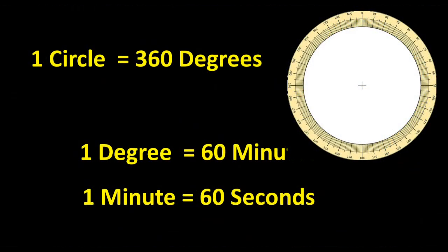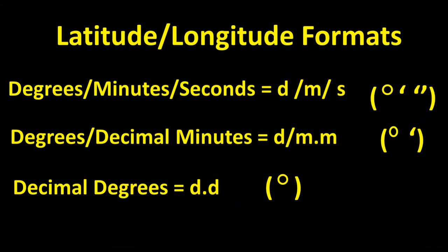First, let's review. Lines of latitude are divided into degrees, as with a standard circle. Each degree is subdivided into 60 minutes, and each minute is subdivided into 60 seconds. There are three formats in which longitude and latitude are given: degrees-minutes-seconds, degrees-decimal minutes, and decimal degrees. We previously used decimal degrees to locate Pendleton, Oregon.